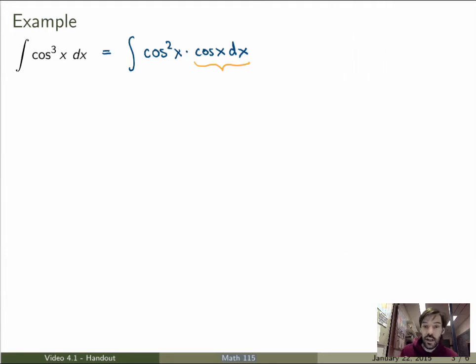Well indeed here I can because I know of a great identity that relates cosine squared to sine squared. I know that cosine square is equal to 1 minus sine square of x. Now I still have my cos of x dx. So this is just using the Pythagorean identity.